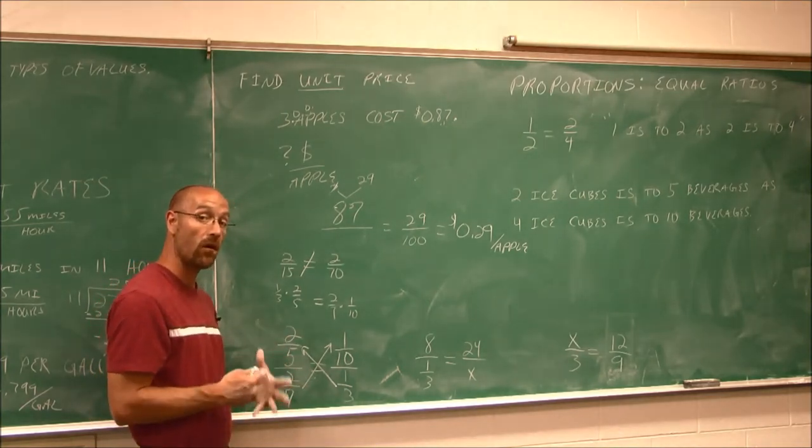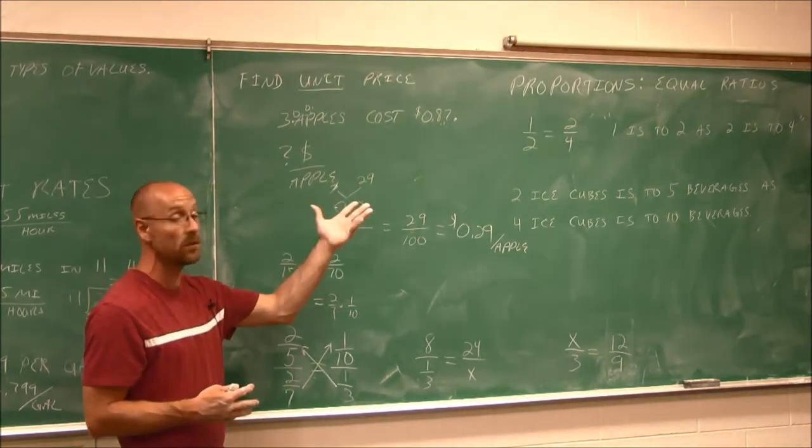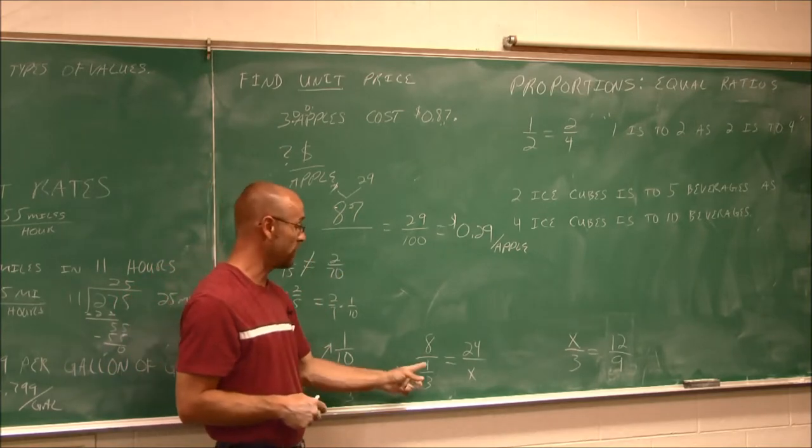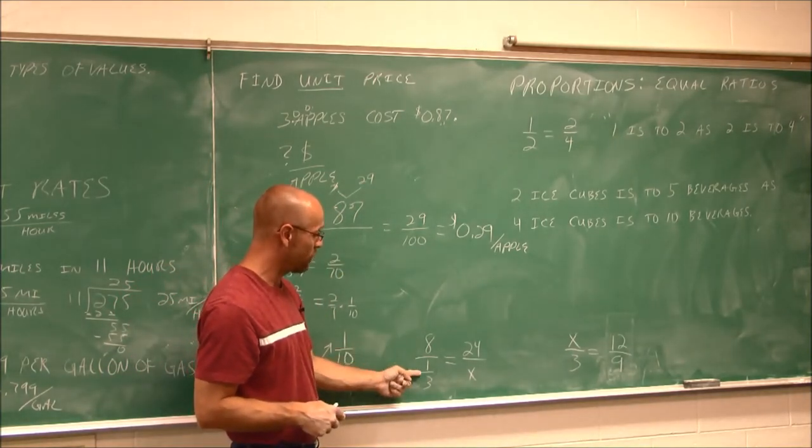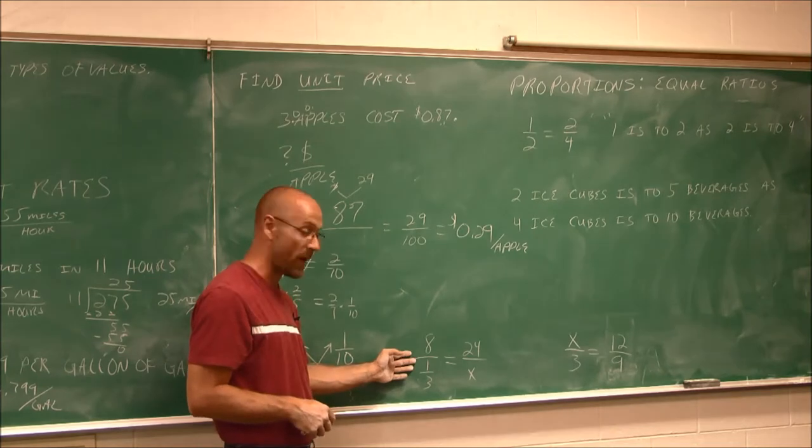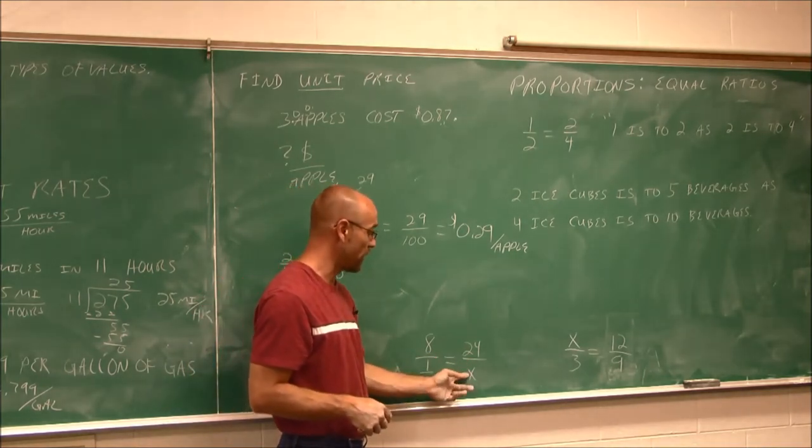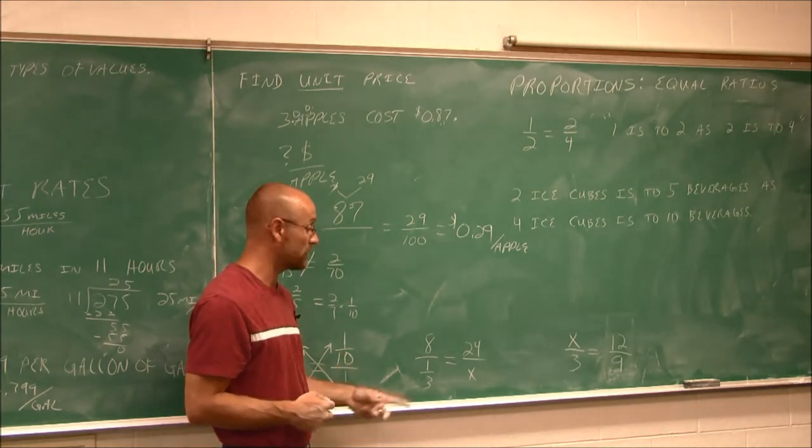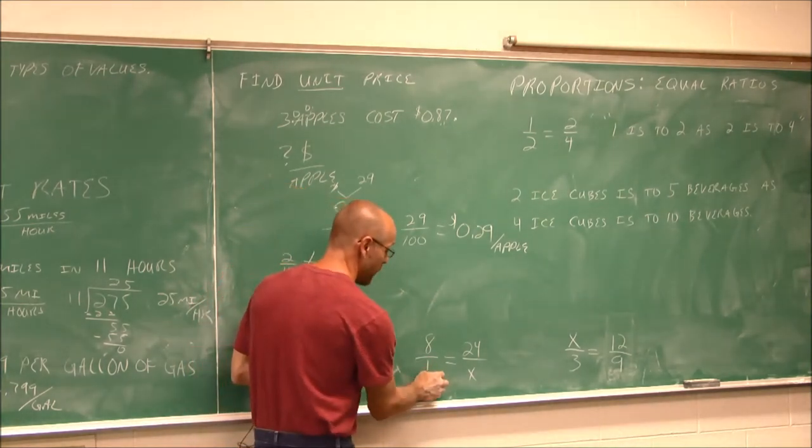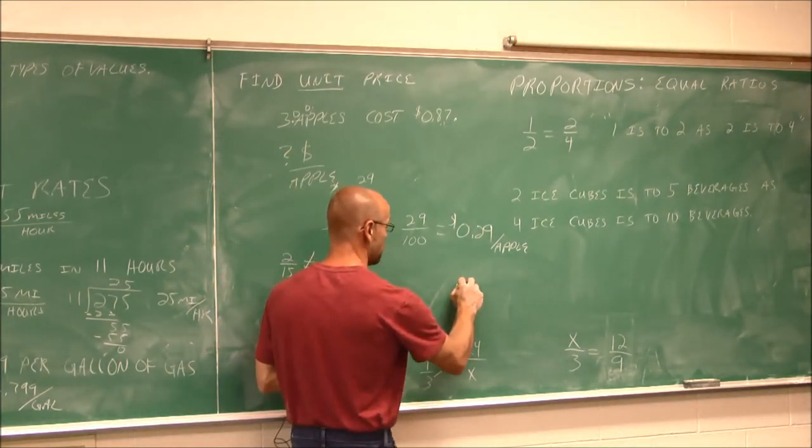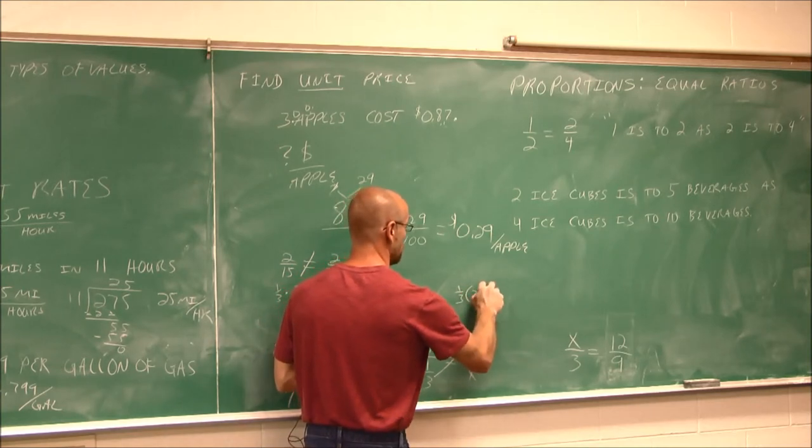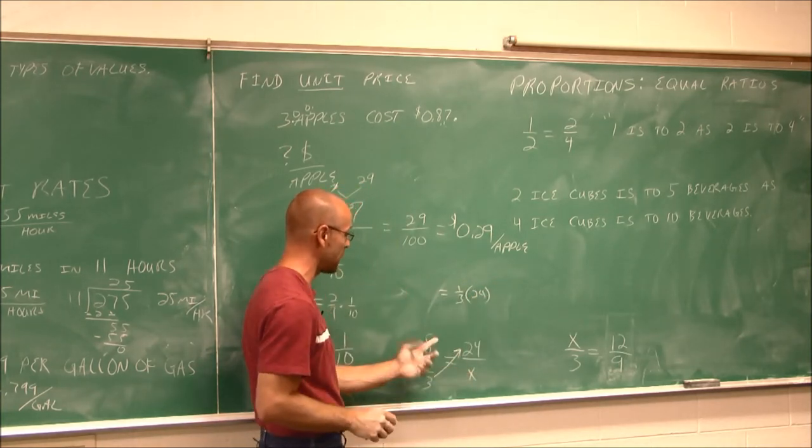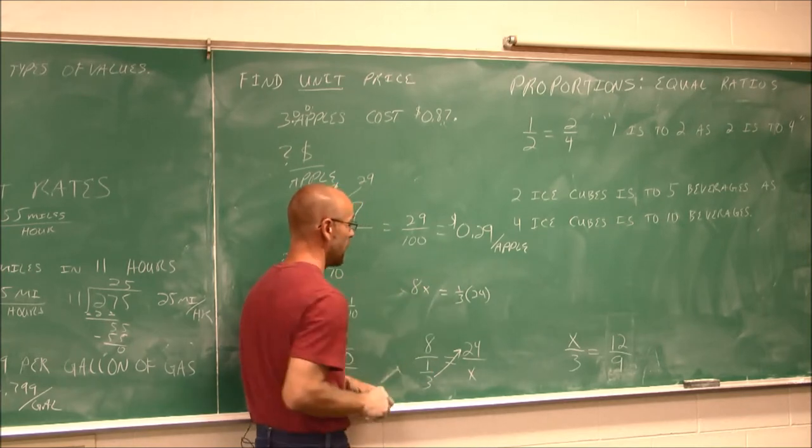So it told me, without having to do any simplification of this side or simplification of that side, I just did cross product, and I could see that that's not true. This cross product is also a tool we can use when working with proportions to solve a variable. In this example, we have 8 over 1/3, a complex fraction, equal to 24 over x, where we have a variable. So let's use the cross product to solve for x, and we'll see what happens. 1/3 times 24, and I'll use parentheses here, and then I have x times 8, which is just 8x.